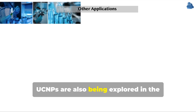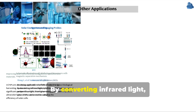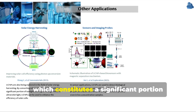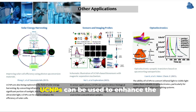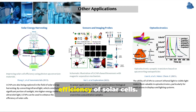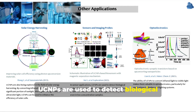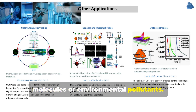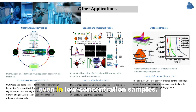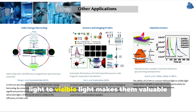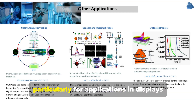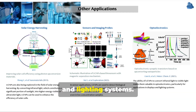UCNPs are also being explored in the field of solar energy harvesting. By converting infrared light, which constitutes a significant portion of sunlight, into higher energy visible or ultraviolet light, UCNPs can be used to enhance the efficiency of solar cells. In sensor applications, UCNPs are used to detect biological molecules or environmental pollutants, serving as highly sensitive probes even in low concentration samples. Their ability to convert infrared light to visible light also makes them valuable in optoelectronics, particularly for applications in displays and lighting systems.